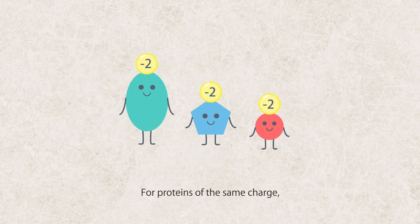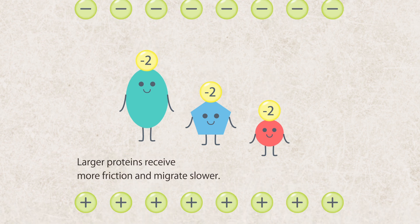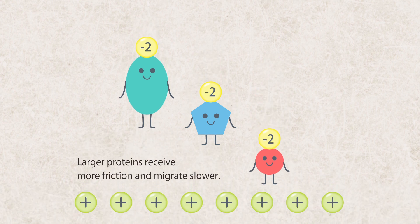For proteins of the same charge, electrophoretic mobility is inversely proportional to the molecular size under a given electric field. Larger proteins receive more friction and migrate slower.